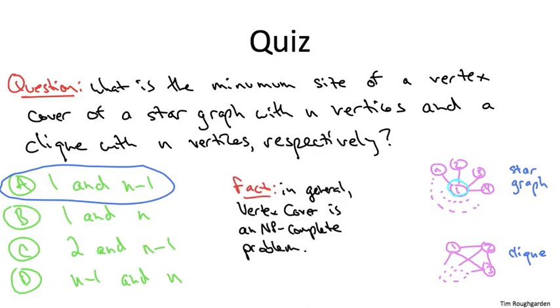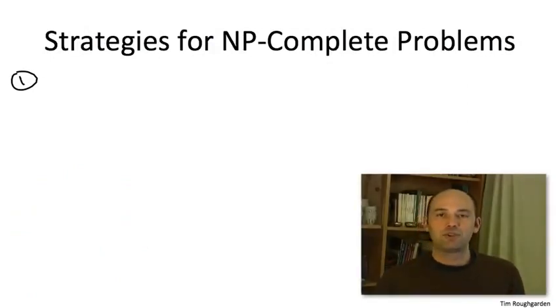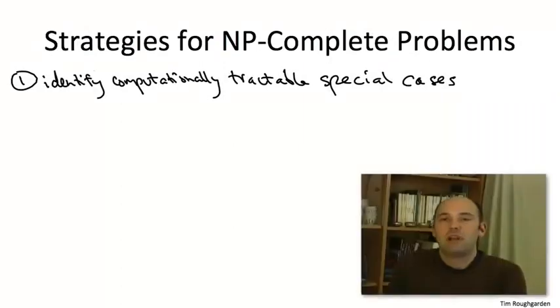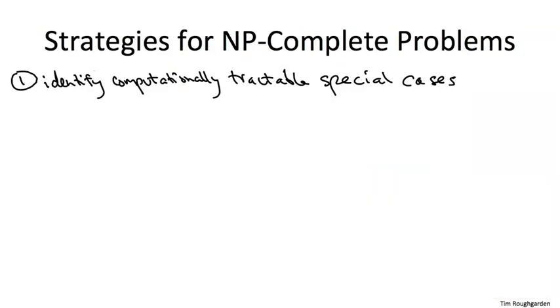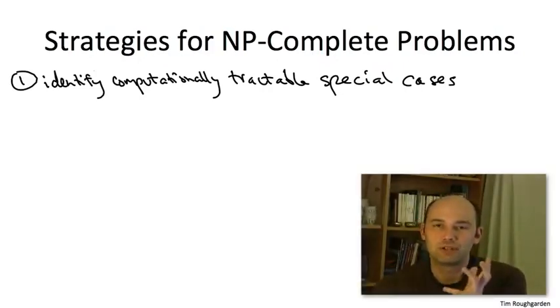That's definitely a bummer. So let's review our strategies for dealing with NP-complete problems that we discussed in an earlier video. The first strategy is to identify computationally tractable special cases of your NP-complete problem. Now, in the best case scenario, the version of the problem that you have to solve in your own application lies squarely inside one of these computationally tractable special cases. Then you're good to go. More commonly, the instances that arise in your application won't necessarily be in one of the computationally tractable special cases, but it can still be useful to have subroutines ready for various special cases.